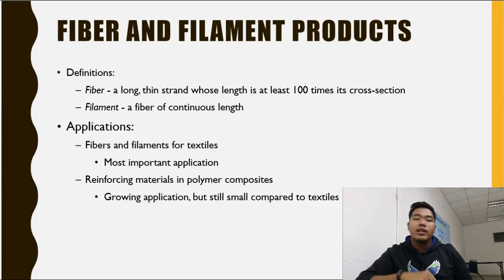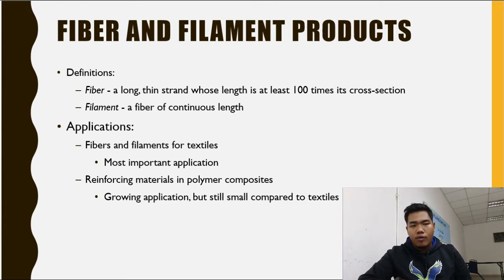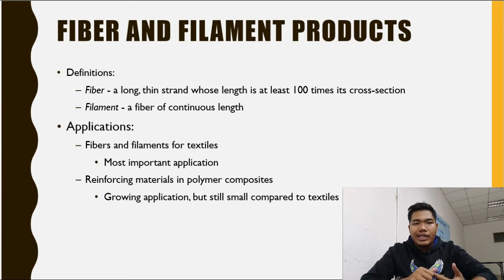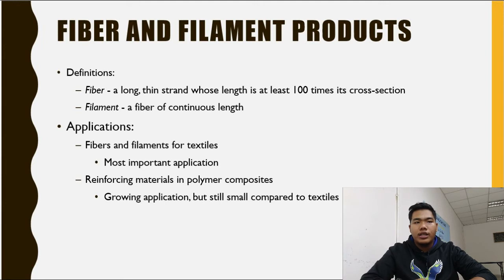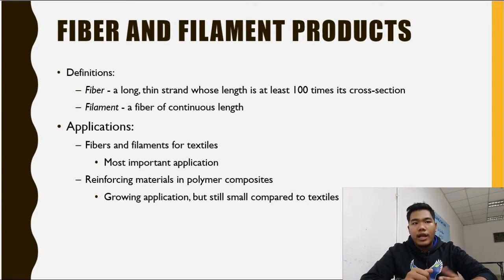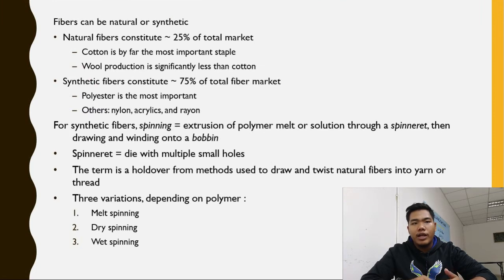The next method covers fiber and filament products. A fiber is a long, thin strand whose length is at least 100 times its cross-section. A filament is a fiber of continuous length. Applications include textiles and reinforcing materials in polymer composites. Synthetic fiber spinning involves extrusion of polymer melts or solution through a spinneret, then drawing and winding onto a bobbin.